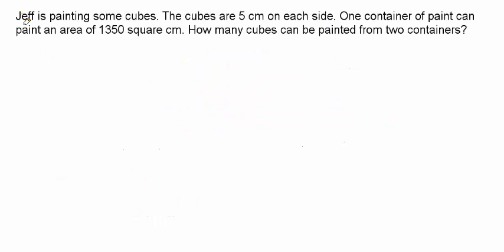Let's try another one. Jeff is painting some cubes. The cubes are 5cm on each side. One container of paint can paint an area of 1350 square centimeters. How many cubes can be painted from 2 containers? A cube is a rectangular prism in which all the sides are the same length — so the length, width, and height all equal 5 centimeters. And when we paint a shape, we paint the outside surface, not what's inside it. Therefore, you need to consider the surface area and not the volume.